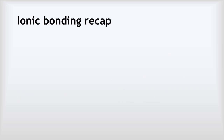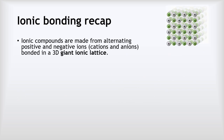Let's start by recapping ionic bonding. Ionic compounds are made from an alternating pattern of positive and negative ions. We call the positive ones cations — remember cations are positive because cats have got cute little cat paws — and we've got anions, which are the negative ones. They form a three-dimensional pattern that we call a giant ionic lattice, with that alternating pattern of negative, positive, negative, positive, not just in two dimensions but also in three dimensions.